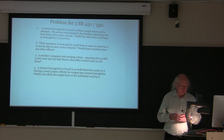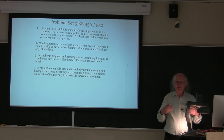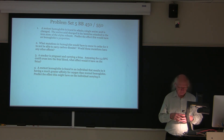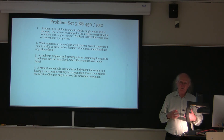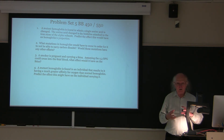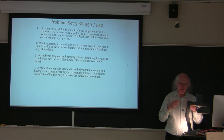Number three says a smoker is pregnant and carrying a fetus. Assuming 2,3-BPG could cross into the fetal blood, what effect would it have on the fetus? A smoker has a higher concentration of 2,3-BPG than a non-smoker, which is why smokers have less oxygen-carrying capacity and get out of breath more easily during exercise. Fetal hemoglobin is different from maternal hemoglobin — instead of the alpha-2 beta-2 configuration, fetal hemoglobin is alpha-2 gamma-2, which is more commonly found in the R state than the T state. This gives fetal hemoglobin a greater affinity for oxygen, literally allowing it to take oxygen away from the mother's hemoglobin.